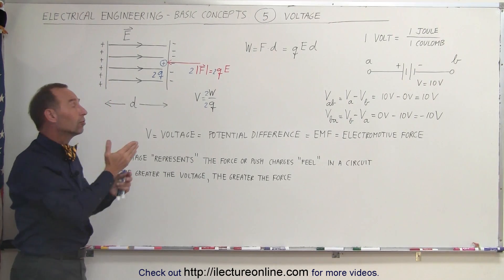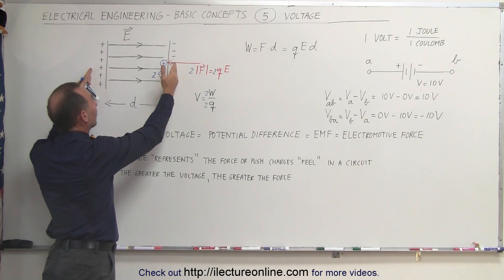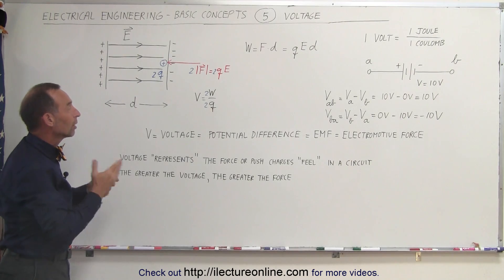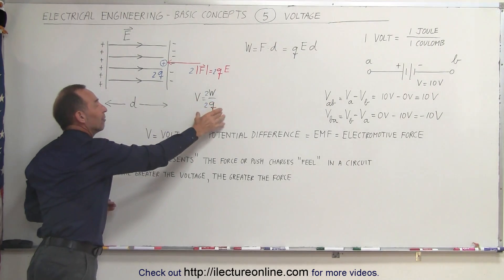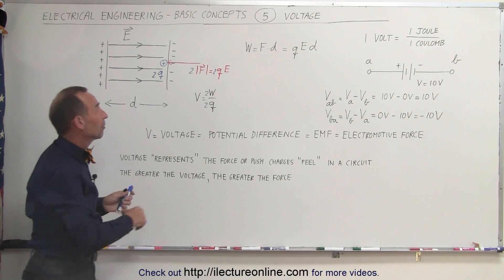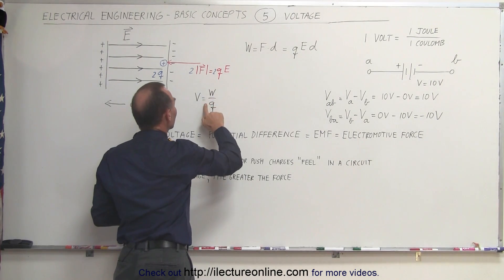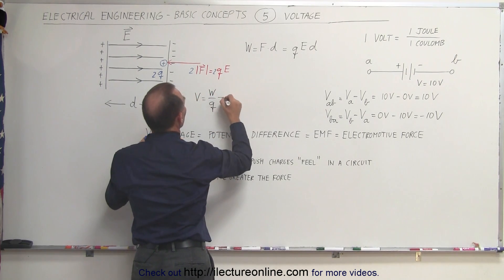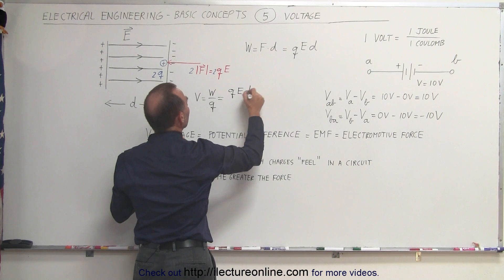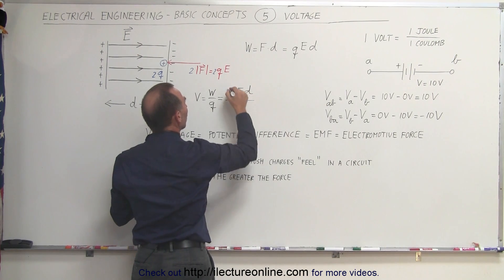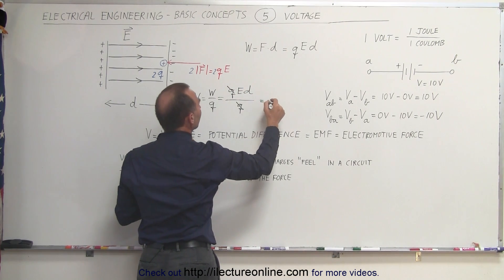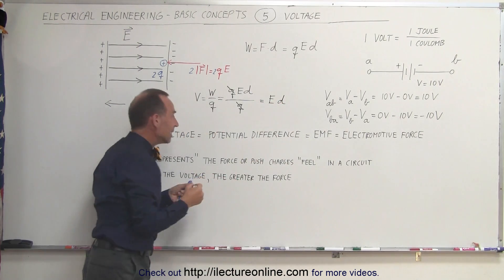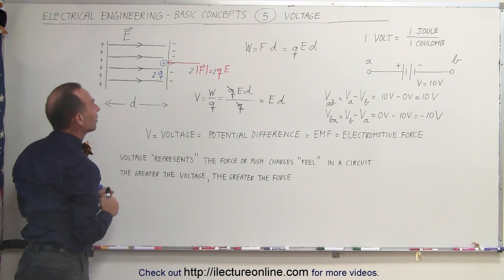Voltage is the work done to get a charge across from the right side to the left side — from the negative charge to the positive charge through an electric field — divided by the charge required. If we plug in what work is equal to, we can see that the work is q times E times d divided by the charge q. The q's cancel out, which means that the voltage is defined as the strength of the electric field times the distance between the two sides of that field.